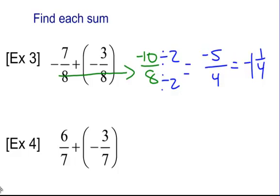Try number 4 on your own. 7 is our common denominator, so we know that it's going to be 7 on the bottom. Here we have 6 plus negative 3. That's like having 6 good guys and 3 bad guys. 6 minus 3 is 3, so we're left with 3/7.